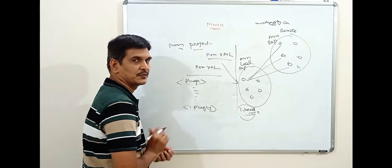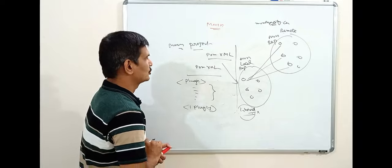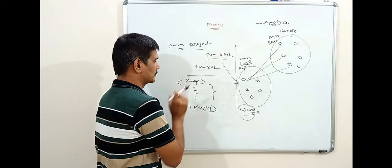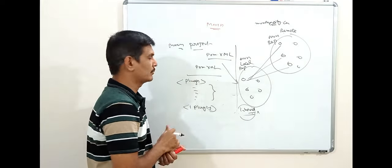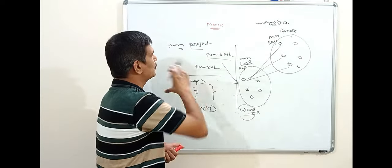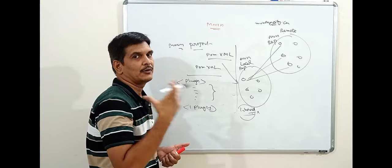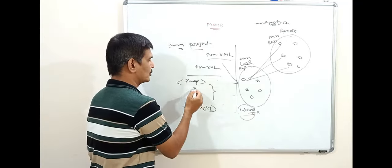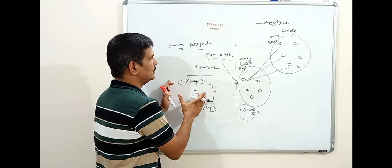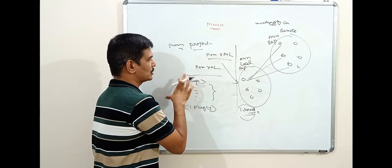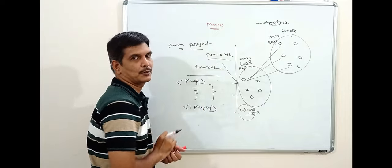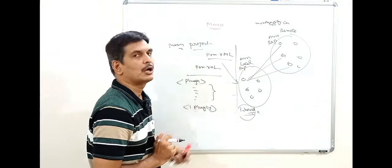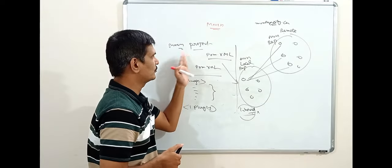Inside the plugins tag we specify all the plugins and project-related configurations. For example, to compile the entire project we need the Maven Compiler Plugin. To run the whole project, the Maven Surefire Plugin is required. To package the whole project, an additional plugin is needed. If the application is web-based and we need to start and stop a server, we add additional plugins for that. Basically, plugins control and organize the complete project through configurations, while dependencies download all required libraries and external JAR files.